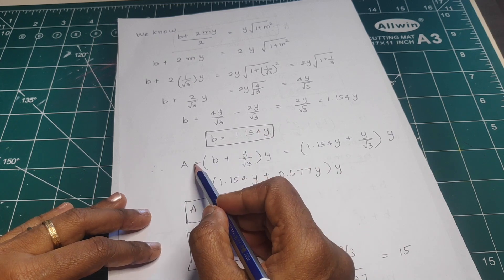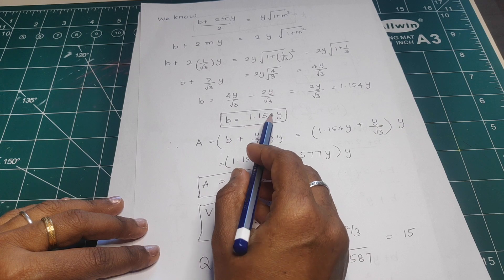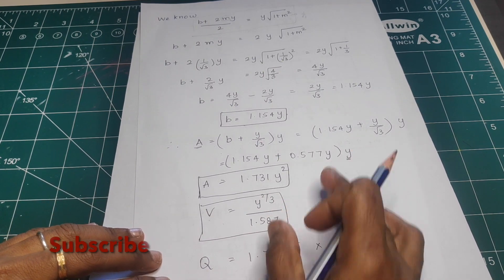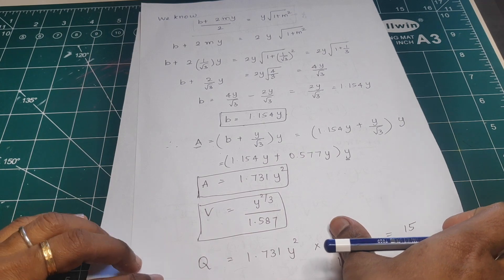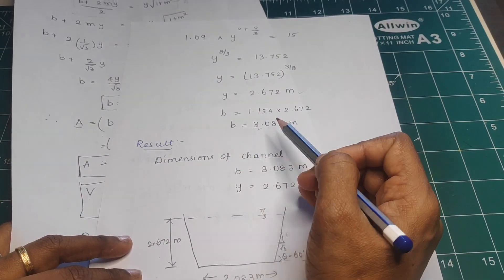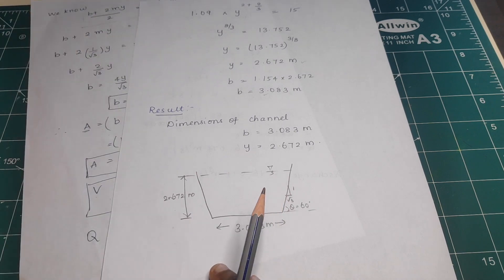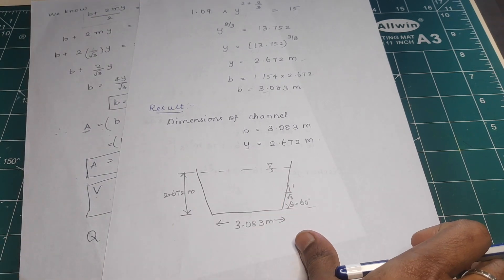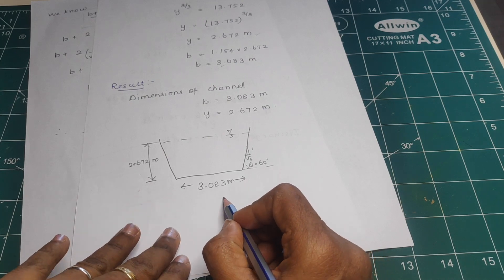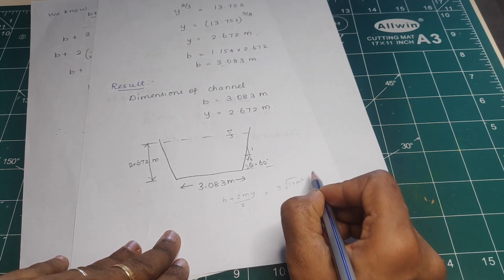We apply b in terms of y. In this case, we substitute the area and the velocity. We substitute the area in terms of y into the discharge equation. We apply the condition: (b + 2my)/2 = y × √(1 + m²). This is the condition for the most economical section, and we refer to the diagram.